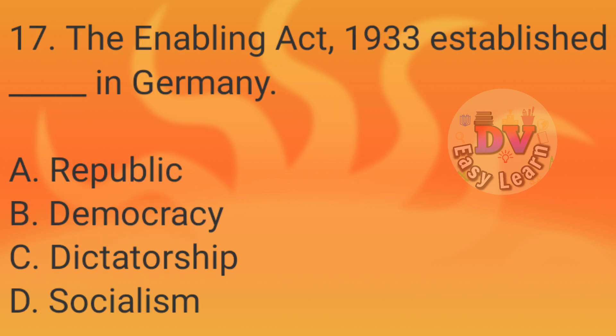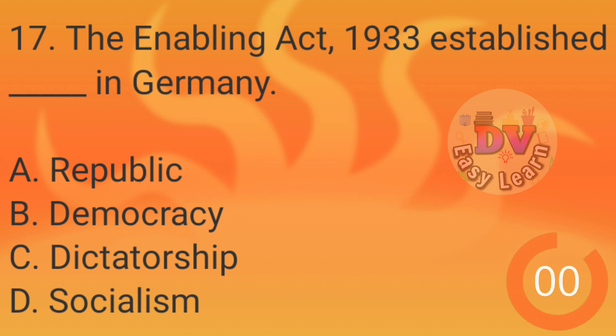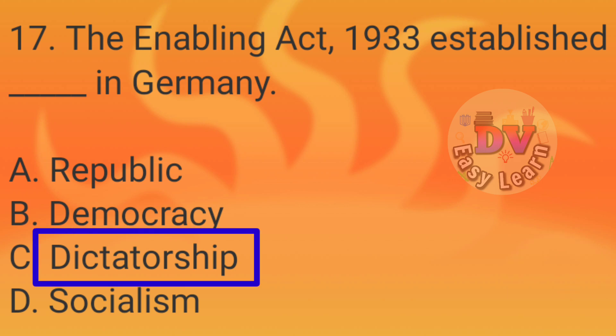Question number 17: The Enabling Act of 1933 established what in Germany? Correct answer: Dictatorship.